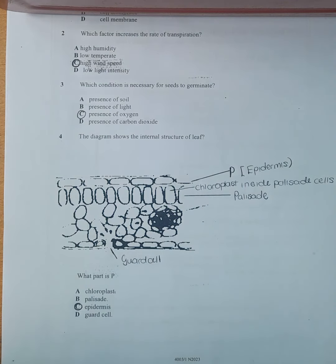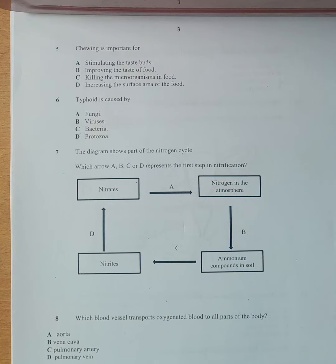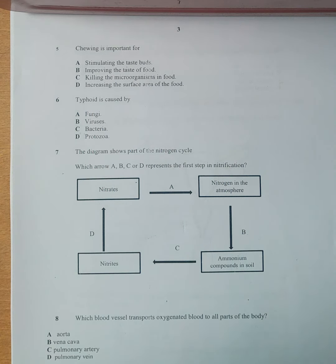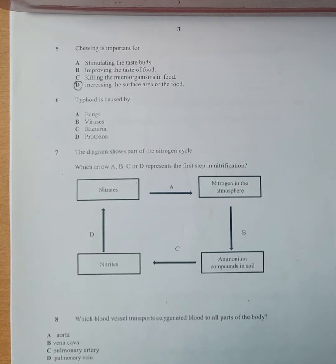Number 5 is reading: chewing is important for... We are going to select D as our answer, which is increasing the surface area of the food. Chewing is important for increasing the surface area of the food and makes food small enough to pass down the oesophagus.